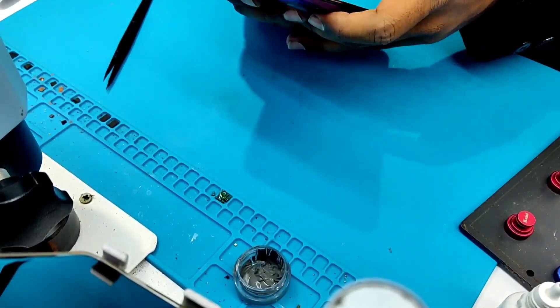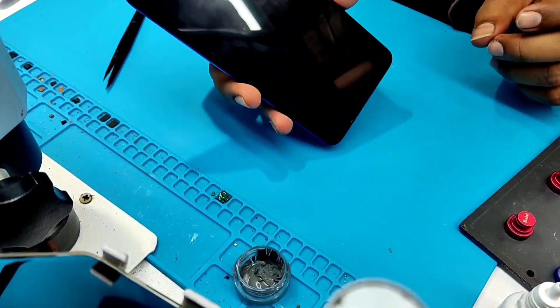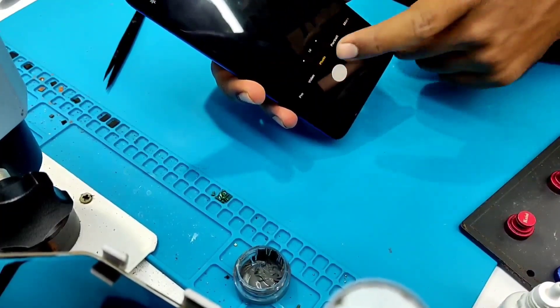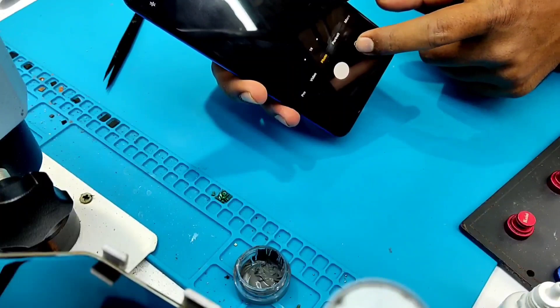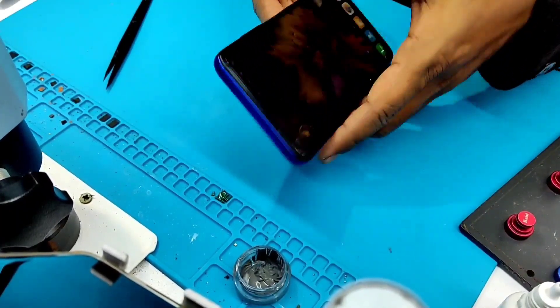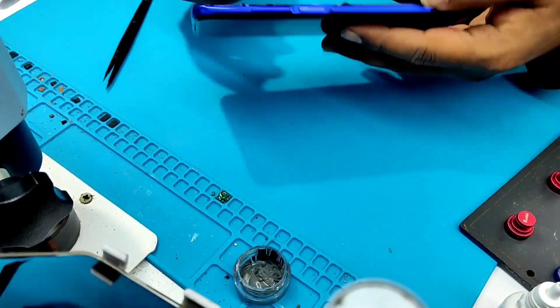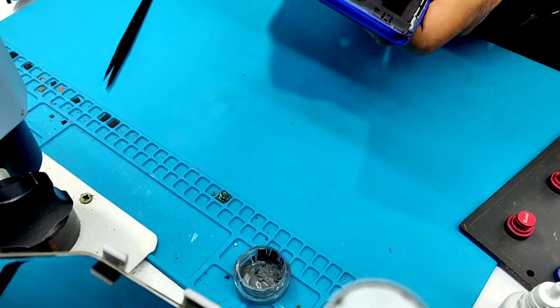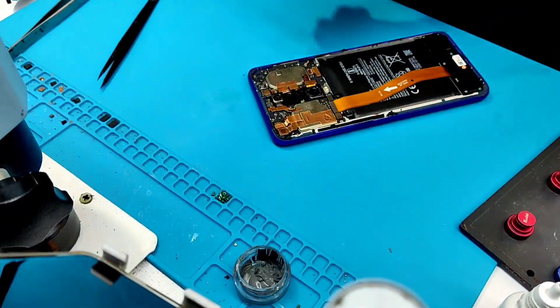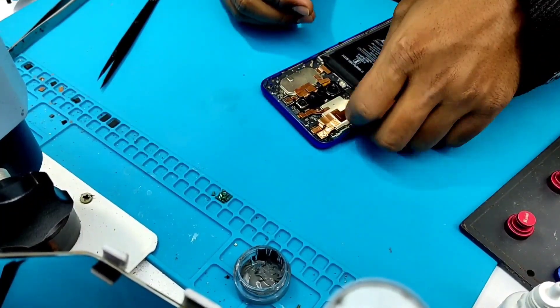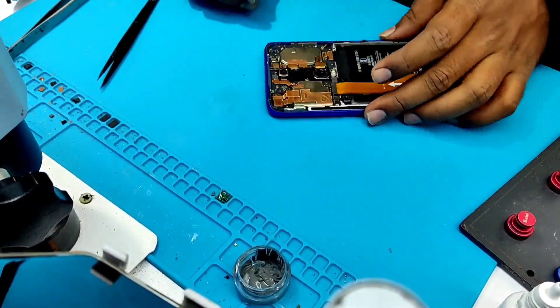Assalamualaikum viewers, today we have a Poco X2 with a camera problem. Let me show you - I open the camera and it doesn't work, just stays black. This phone was dropped and after an update the camera stopped working. This phone is from Bogura.